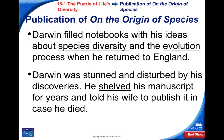Darwin was actually stunned and disturbed by his own discoveries. After he wrote his manuscript, he was so afraid of it that he told his wife to publish it when he died. He was afraid to publish it because he feared the backlash, since it goes against some people's religious views. So he didn't publish his work as soon as he wrote it.